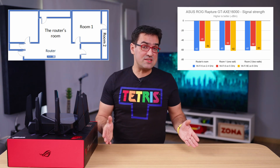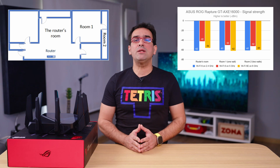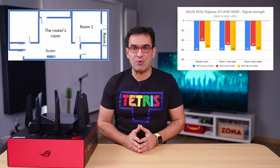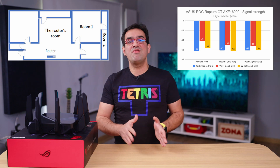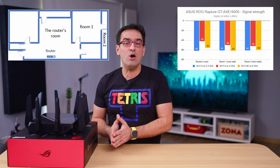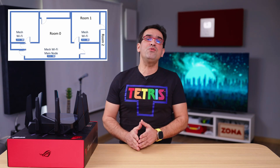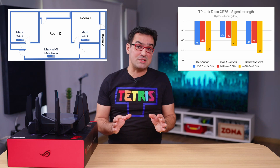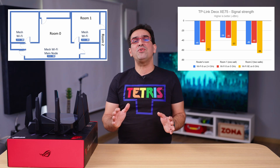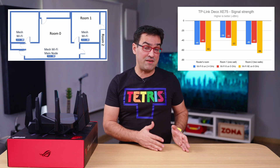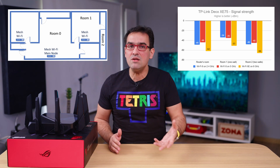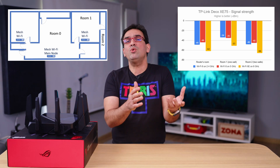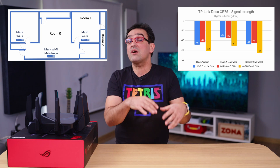I first measured the signal strength using NetSpot. As you can see, the ROG Rapture delivered better signal strength when using the Wi-Fi 6 standard on the 5 GHz band than when using Wi-Fi 6e on 6 GHz. The same was true for the Deco — the 6 GHz band suffered from lower signal strength than the 5 and 2.4 GHz bands. However, this doesn't necessarily mean you get lower speed; it just means you get a smaller coverage area.